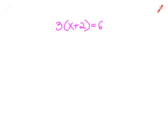So let's distribute. 3 times x is 3x, plus 3 times 2 is 6, equals 6. Subtract 6 from both sides of the equation.